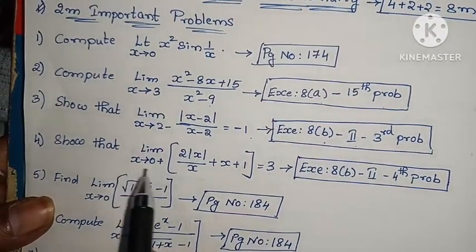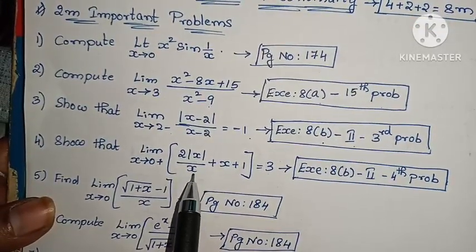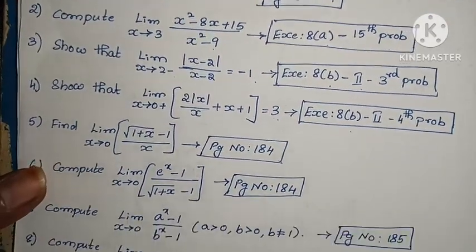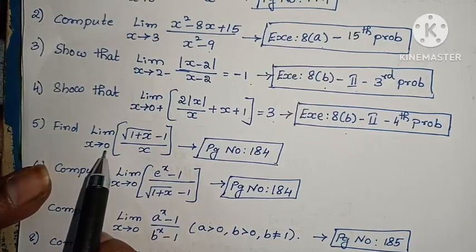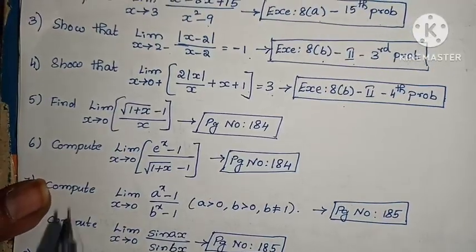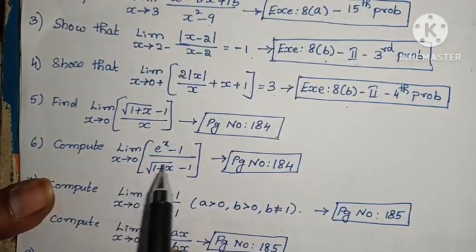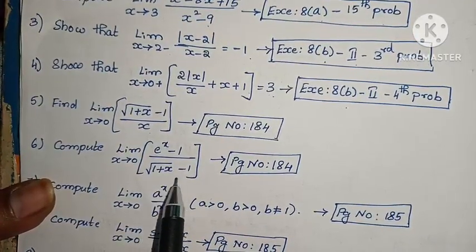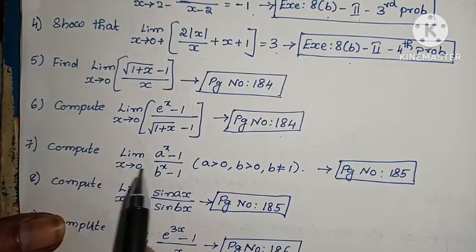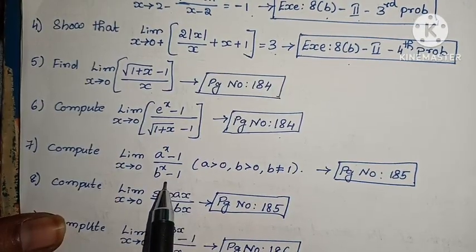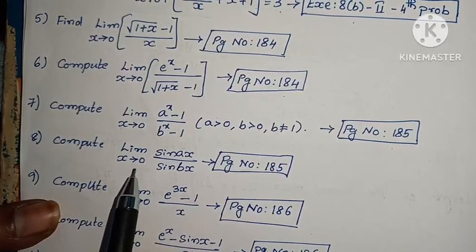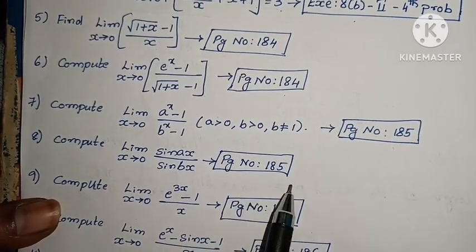Next, show that limit x tends to 0 plus, 2 into modulus of x by x plus x plus 1 equals 3 — 2nd Roman, 4th problem. Next, find limit x tends to 0, root of 1 plus x minus 1 by x. Page number 184. Next, compute limit x tends to 0, e to the power x minus 1 by root of 1 plus x minus 1. Page number 184. Next, compute limit x tends to 0, a to the power x minus 1 by b to the power x minus 1. Page number 185. Compute limit x tends to 0, sin(ax) by sin(bx). Page number 185.